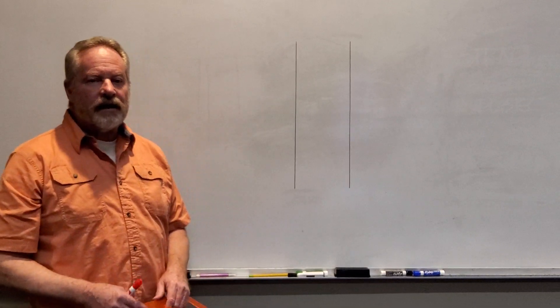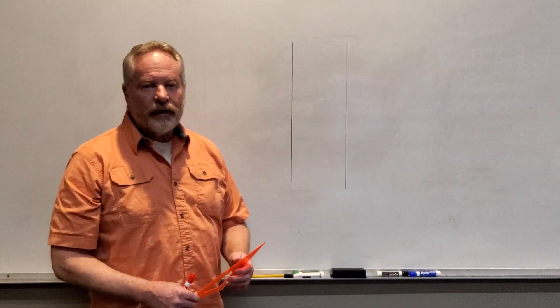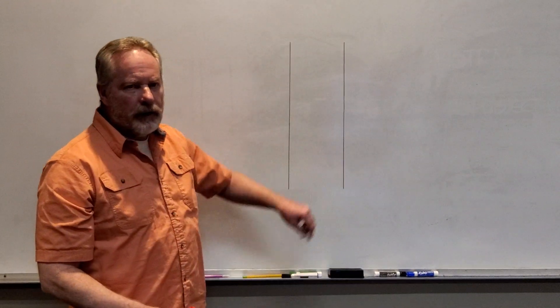The second basic shape we're going to discuss is the cylinder. When you draw a cylinder, it's very simple in that you draw two vertical lines that are parallel to each other.